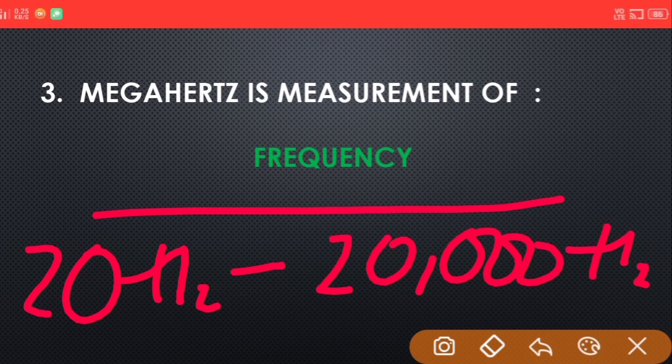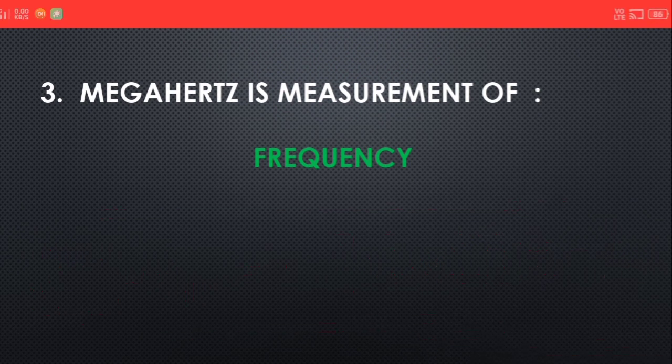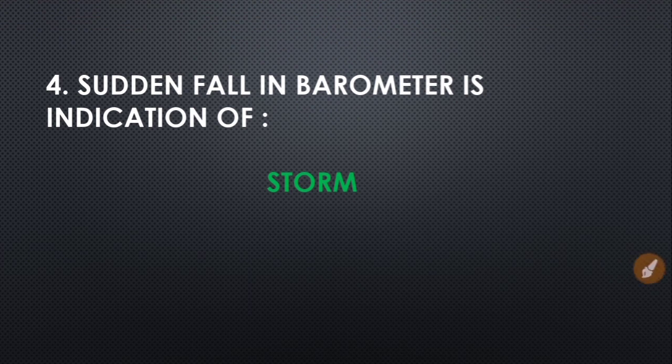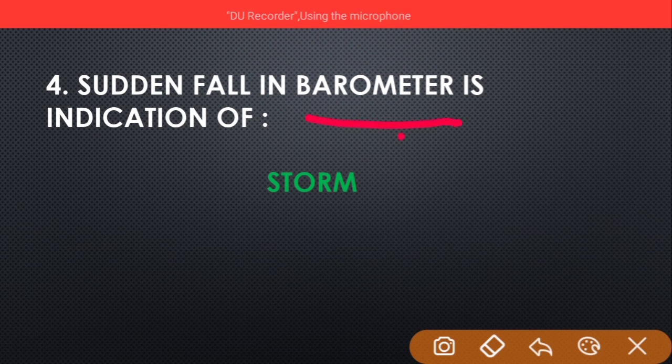Fourth question: sudden fall in barometer is indication of storm. The barometer is a device which is used to measure atmospheric pressure.